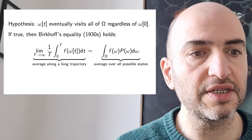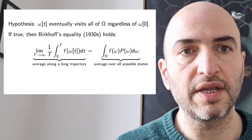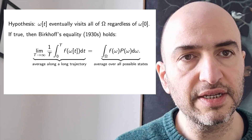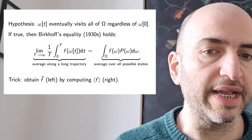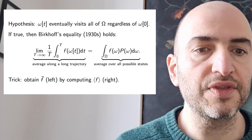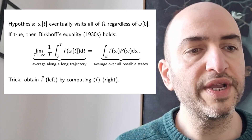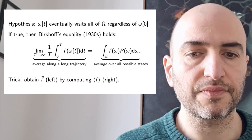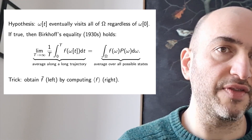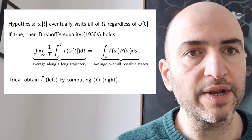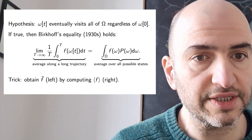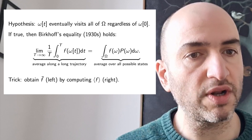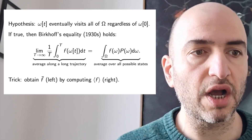If this ergodic hypothesis is valid, then it allows a trick. If we're interested, as physicists were, in the time average f-bar on the left, we can find it by computing the expectation value, or ensemble average, on the right. Now, Boltzmann proposed this trick in the 1870s, and it is useful when we can reason — in other words, do physics — about the possible configurations of the gas, but when we are interested in the evolution of one system, the real system we're studying, over time. And of course, we can only use this trick when ergodicity is a valid assumption.